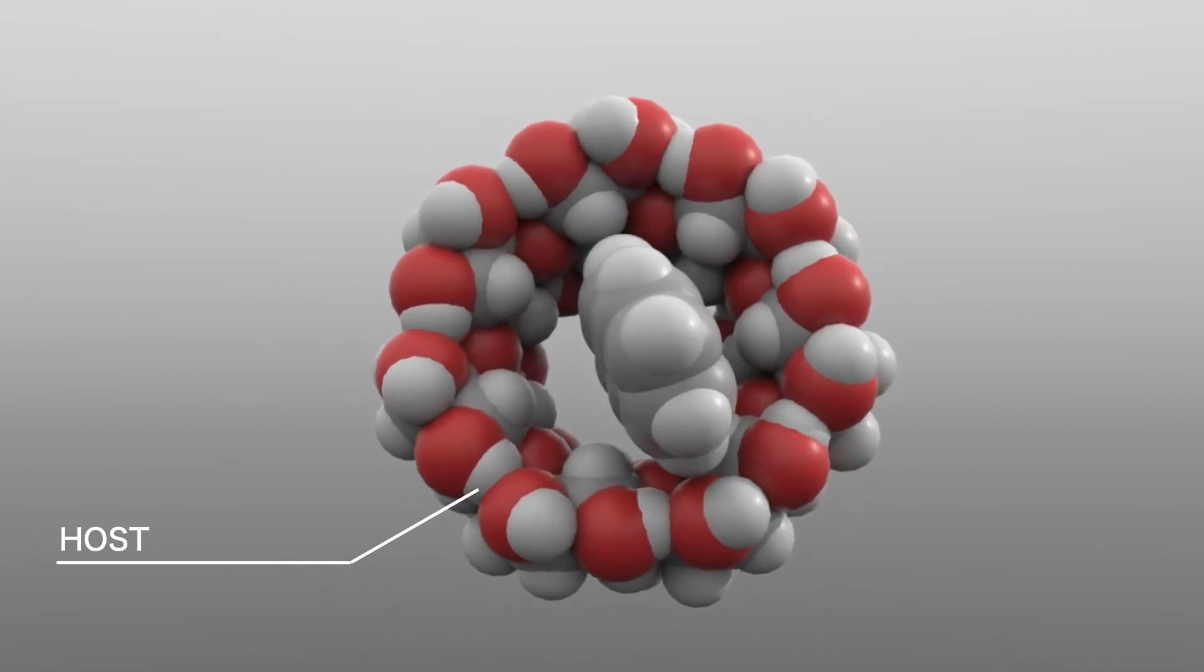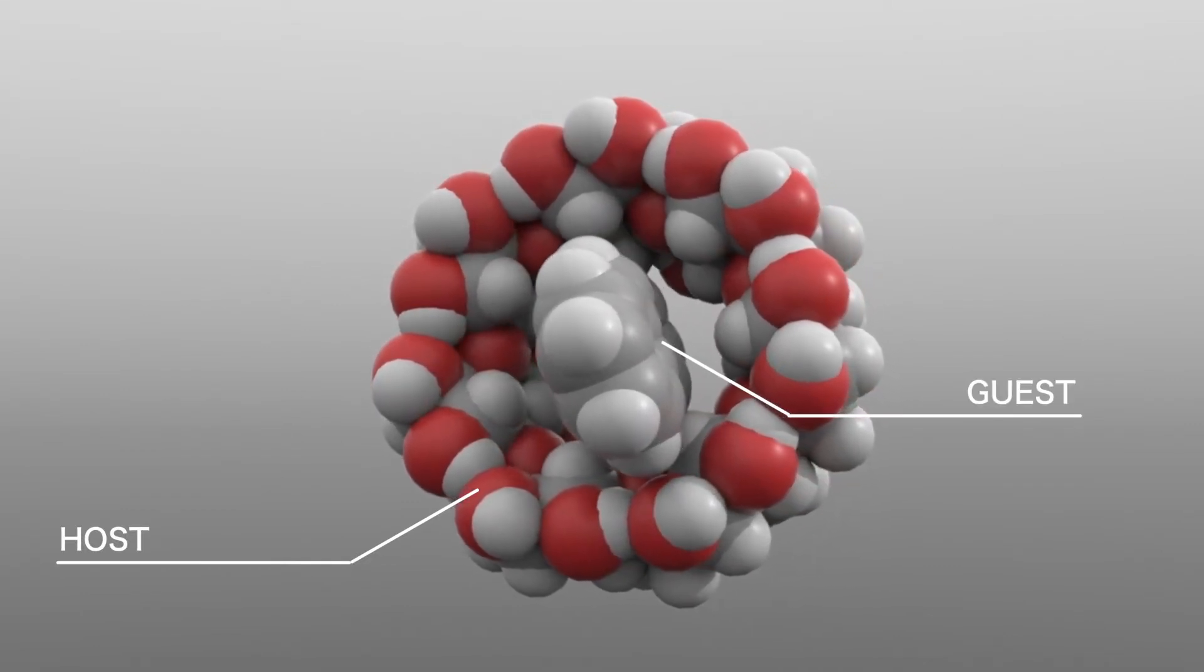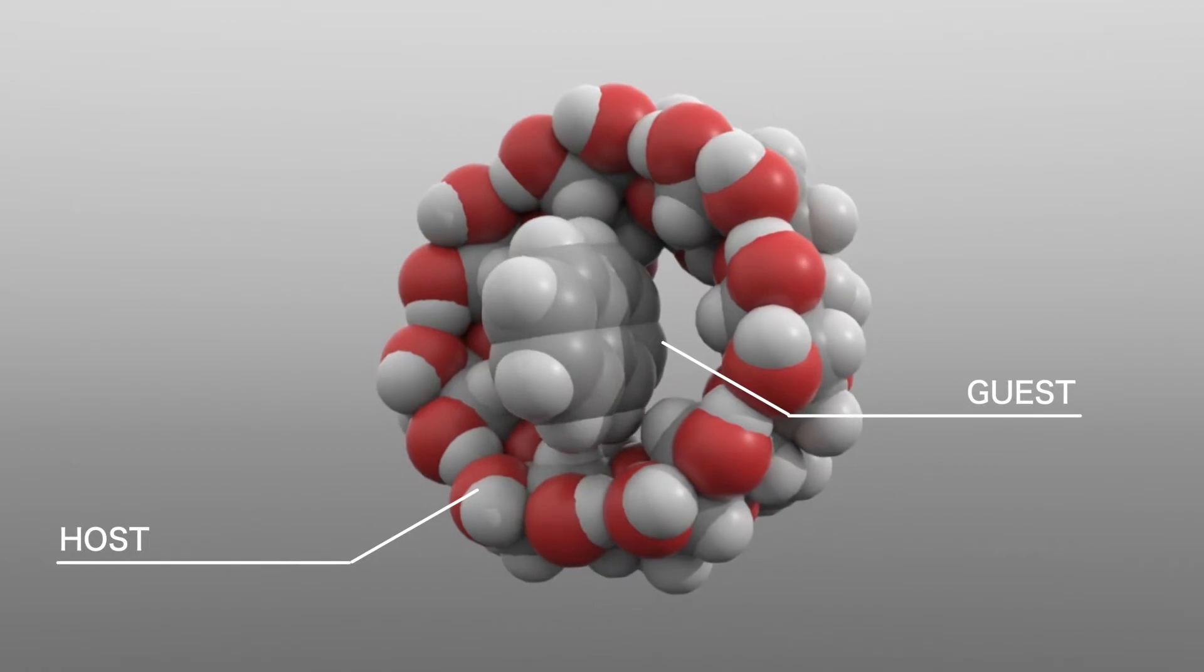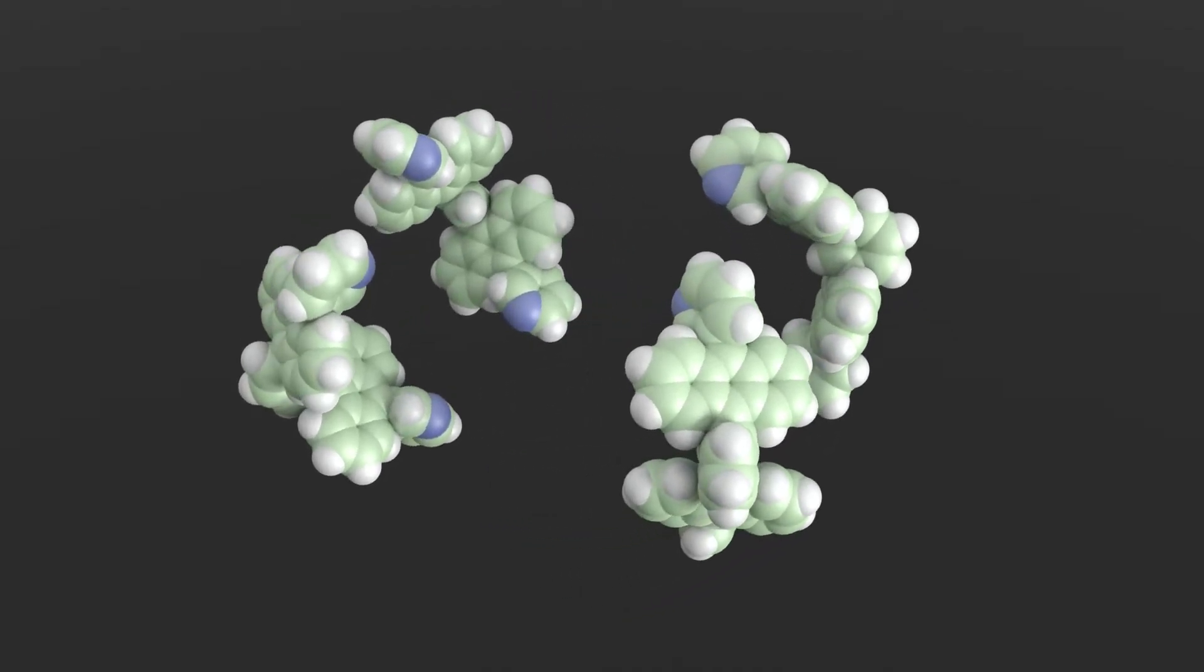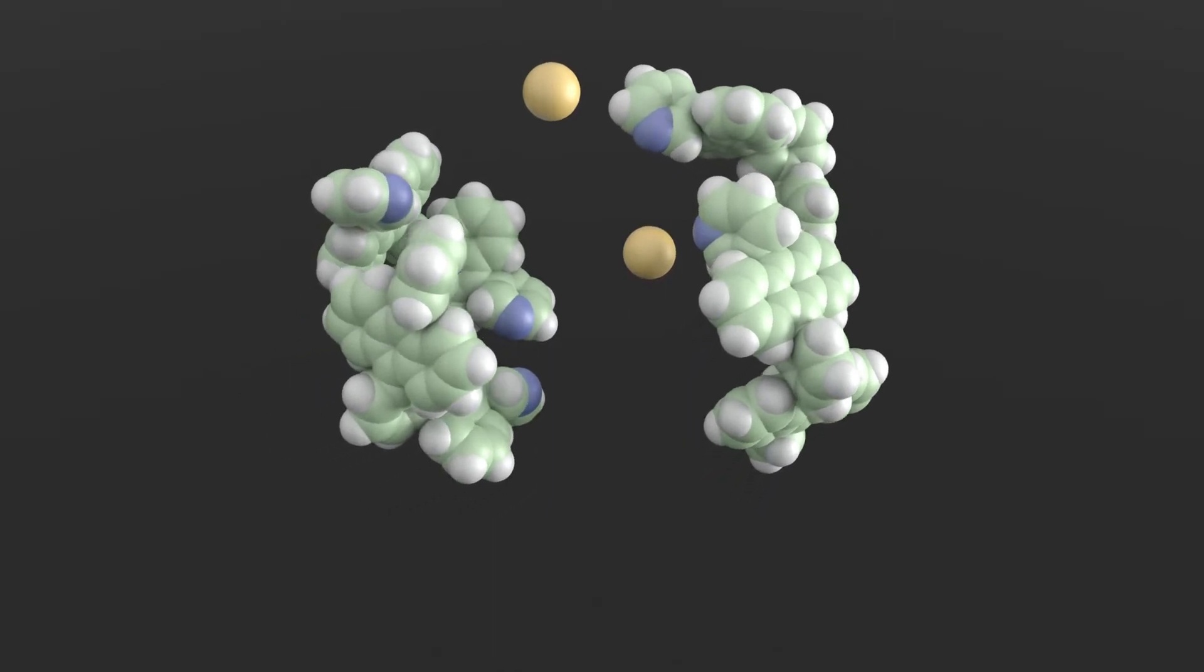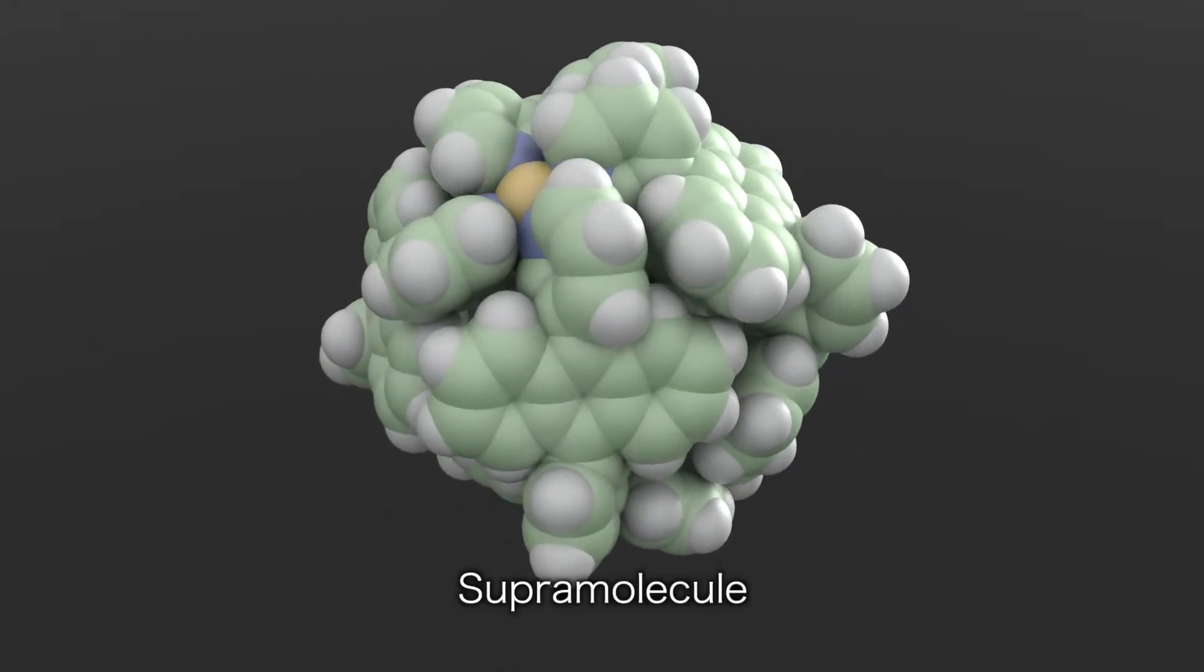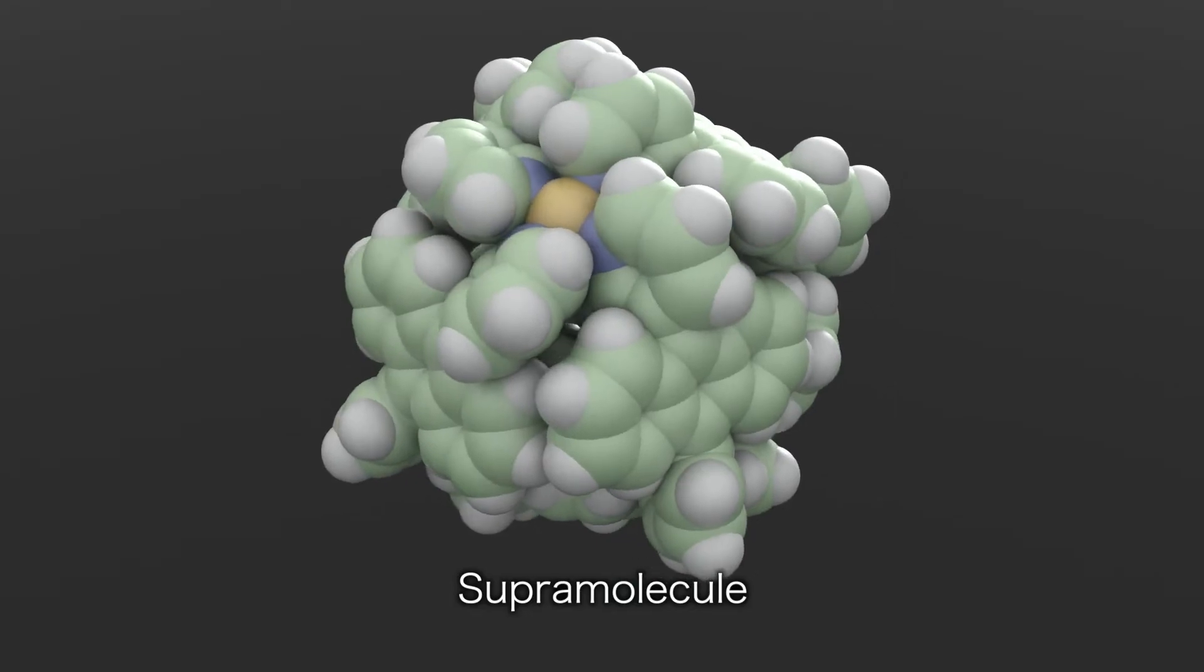With its characteristic doughnut shape, cyclodextrin acts as a host that encapsulates guest molecules inside the doughnut hole. When host and guest molecules bind together loosely through weak intermolecular forces, they form a supramolecule.